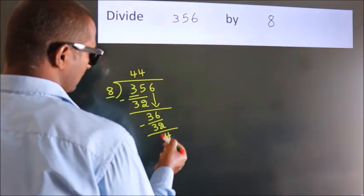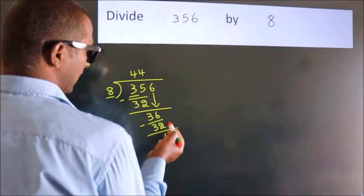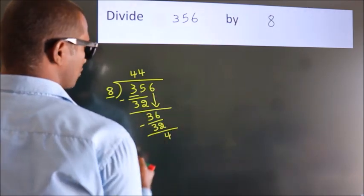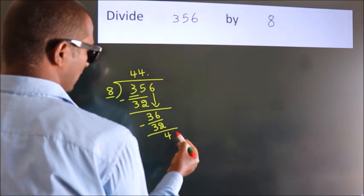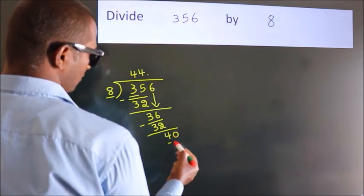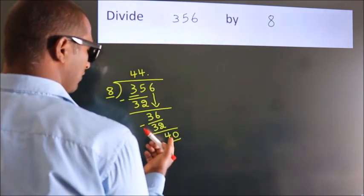After this, no more numbers to bring down. So what we do is we put a dot and take 0. So 40. When do we get 40? In the 8 table.